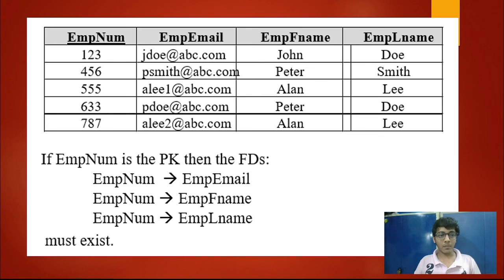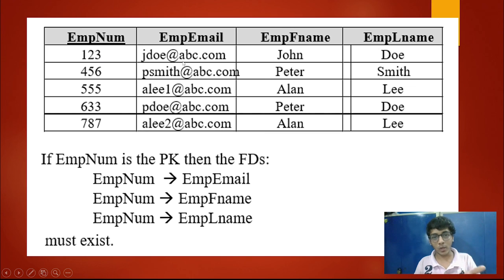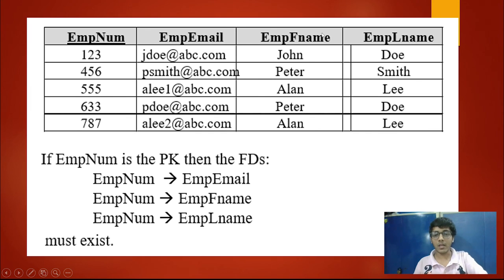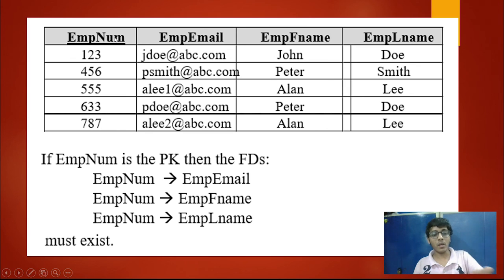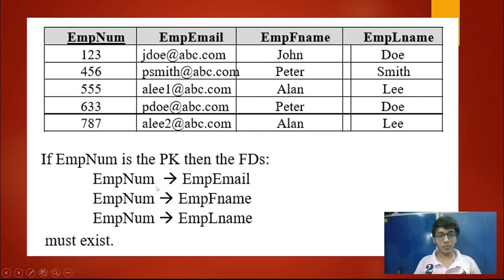Consider a table with columns: employee number, employee email, employee first name, and employee last name. Since employee number is the primary key, it must determine all other attributes. The employee number cannot be null because primary key values are not null. So employee number determines employee email, employee first name, and employee last name — these three functional dependencies must exist for this table.